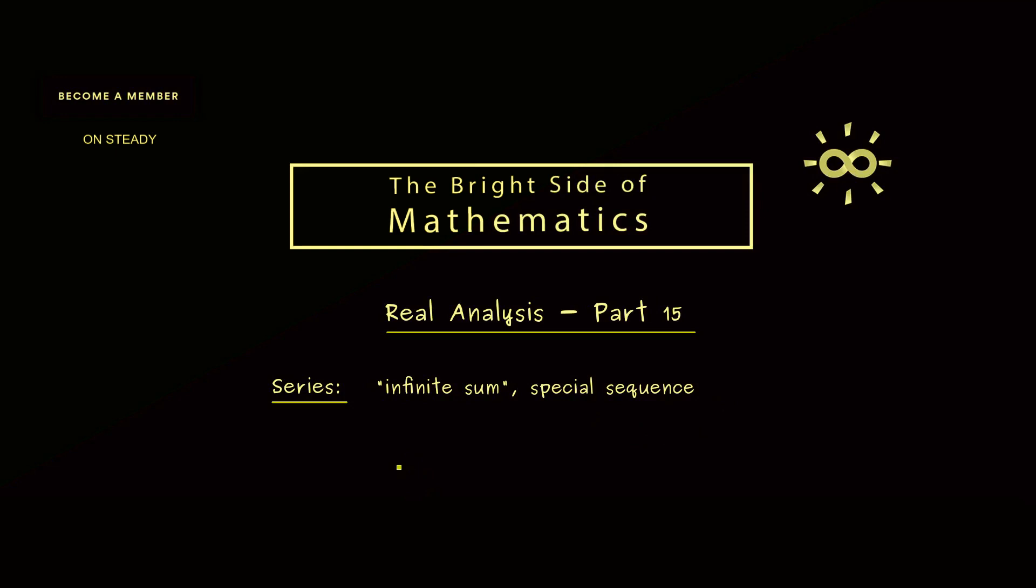Ok now in some problems it can occur that we need to add up infinitely many numbers. For example we have the number a₁, then we add a₂, then a₃, a₄ and so on. To make this shorter you could say let's use the sum symbol the capital sigma where we go from k is equal to 1 to infinity. This is then what we call a series so just adding infinitely many numbers.